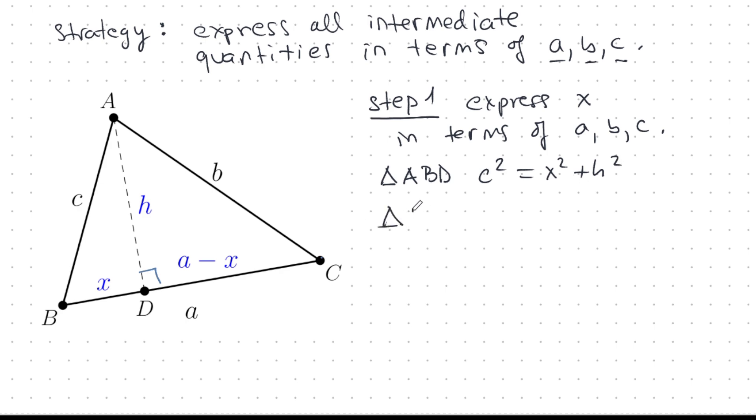Now, the other triangle is triangle ACD. And what does that tell us? B squared is A minus X squared plus H squared. So, if I have labeled them two and one, and I do two minus one, what happens here? Well, I get B squared minus C squared equals